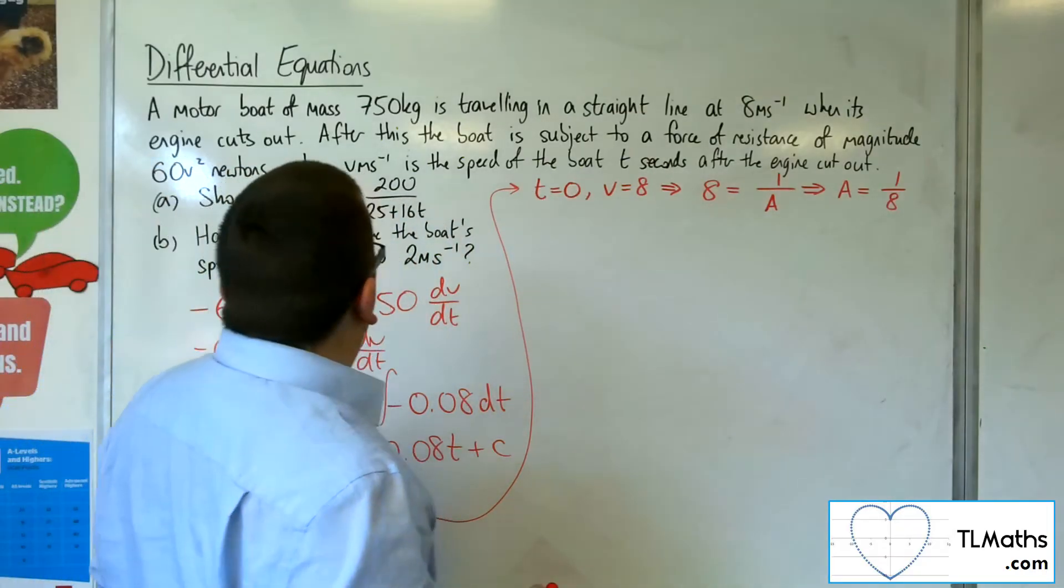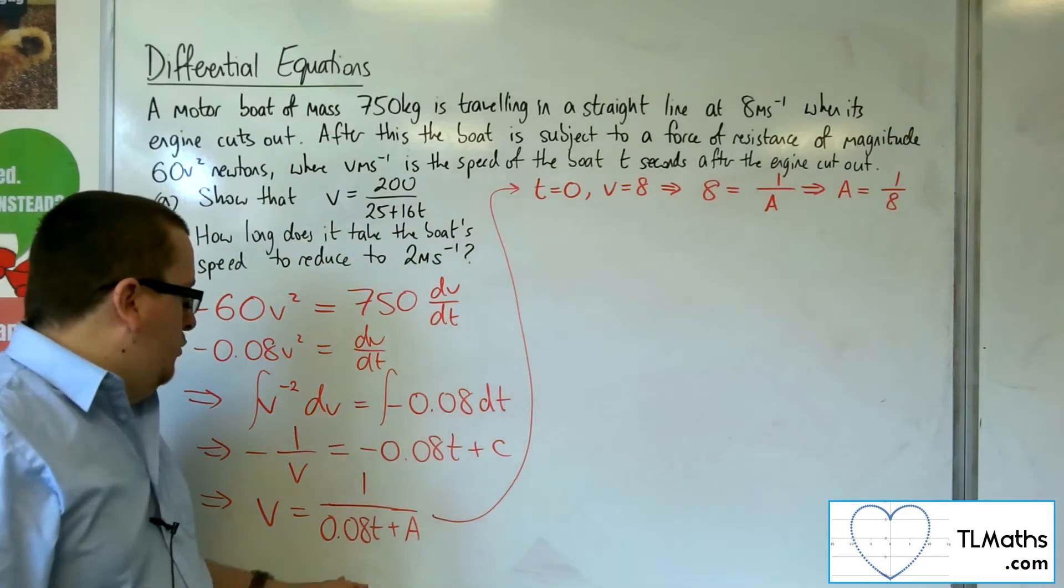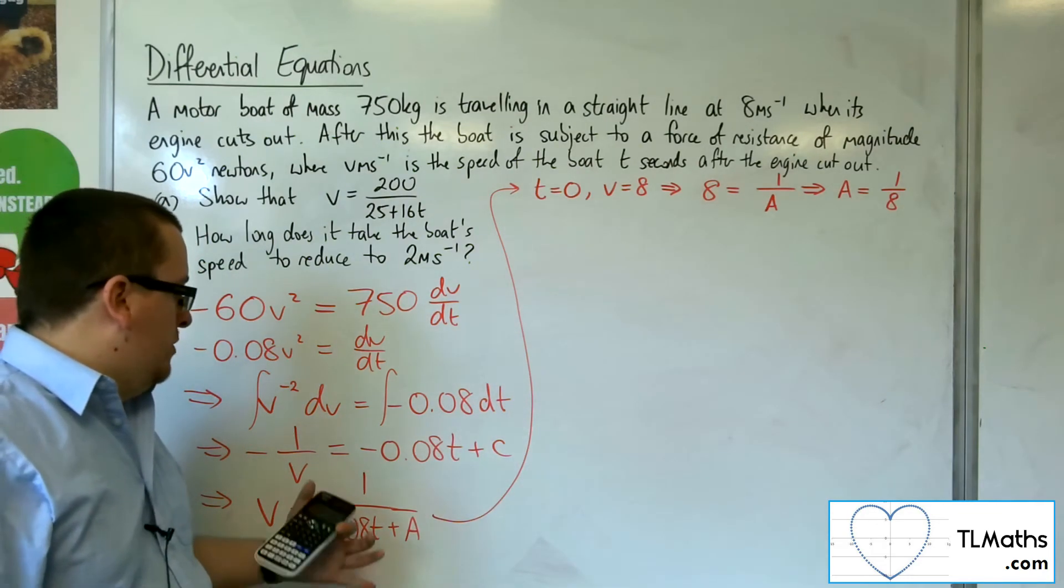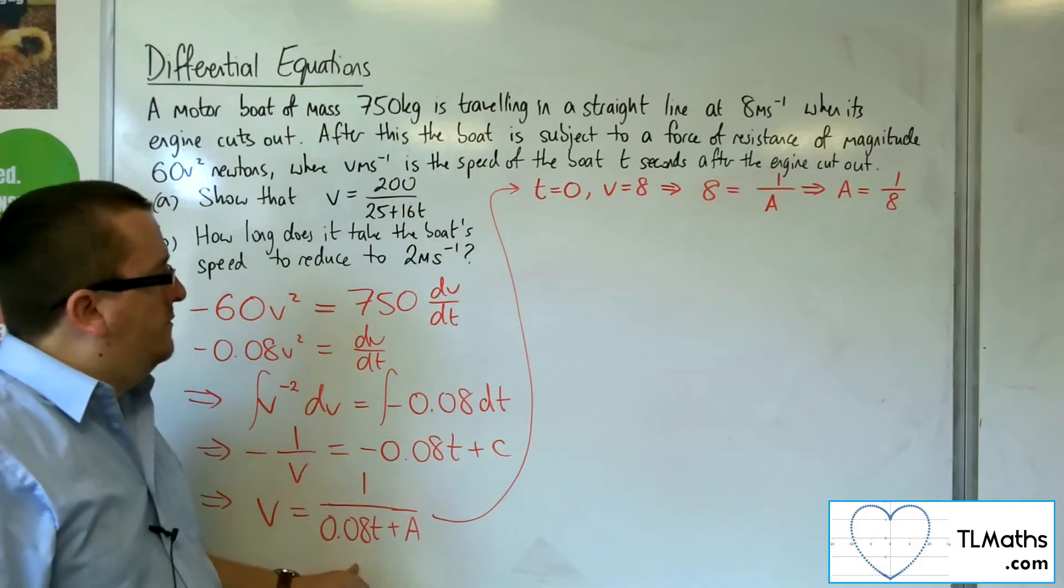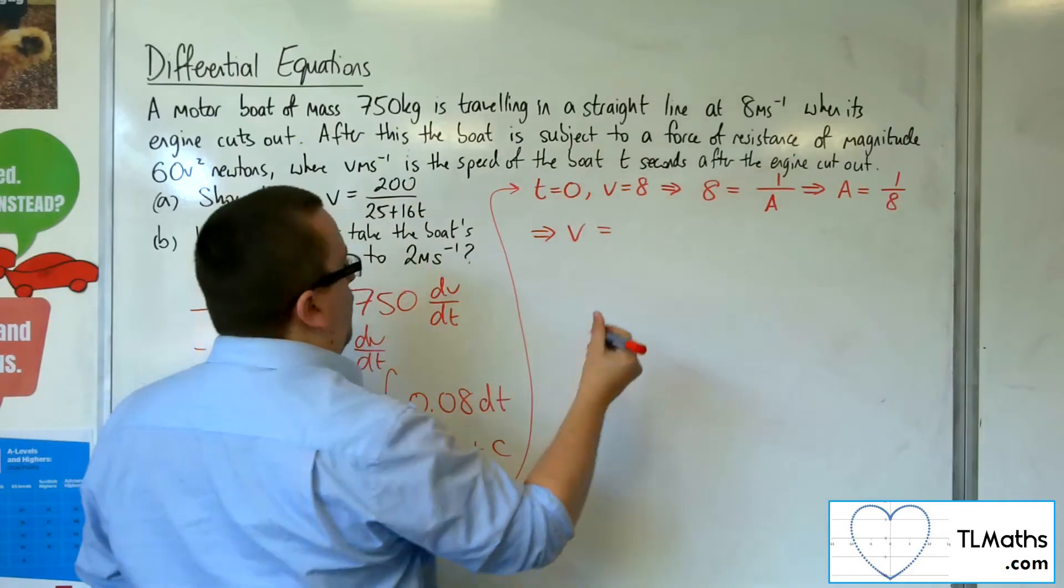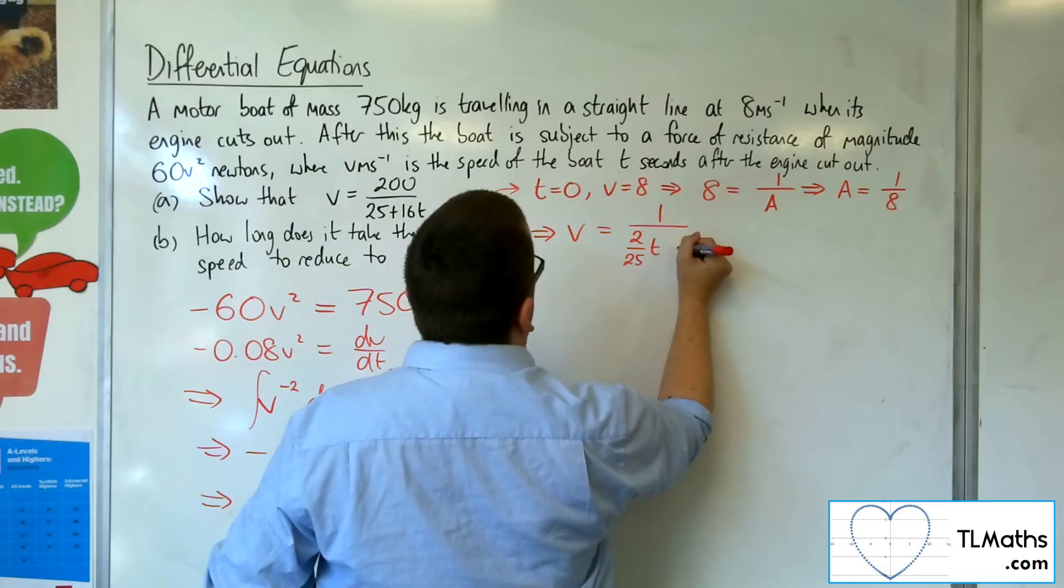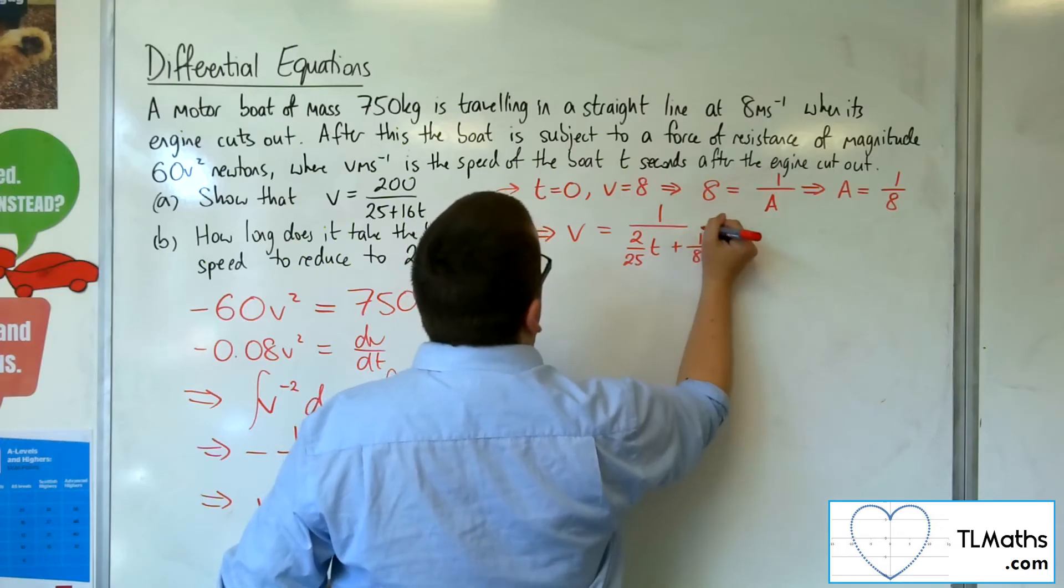So it probably would have been preferable to write the 0.08 back as a fraction, so the 2 over 25. So let's do that. So we've got V is equal to 1 over 2 over 25T plus now 1 over 8.